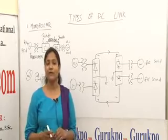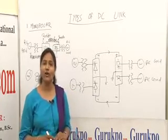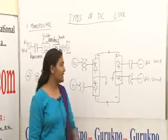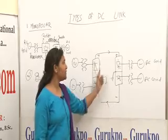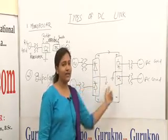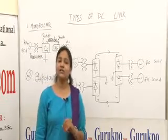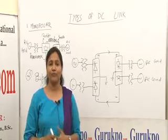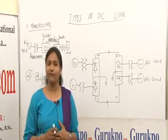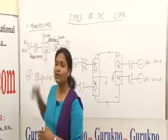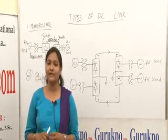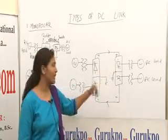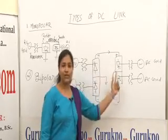In the bipolar link, there is a benefit that if due to some maintenance or fault, one of the conductor systems is under non-working conditions, then the system can be used as a monopolar link using the ground as a return path. Hence the stability of this system is very high as the power capacity can be reduced to half. But in the monopolar system, if there is some fault, the whole system is out of working. In the bipolar system, half of the load capacity can still be carried out by converting it into a monopolar system.